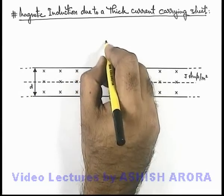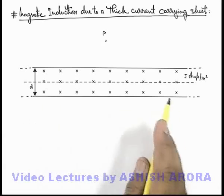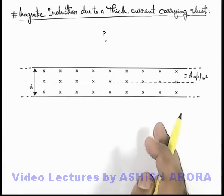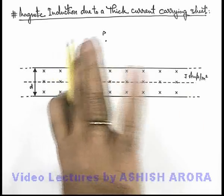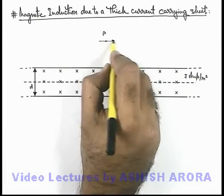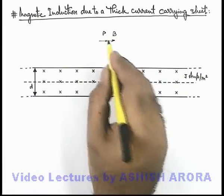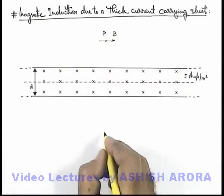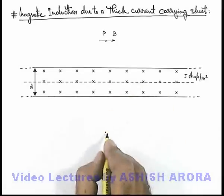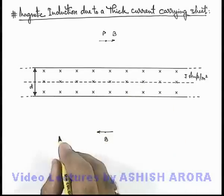Say if, outside at a point P, we are required to find the magnetic induction due to the sheet. The direction we can directly obtain by using the right-hand thumb rule. If current is going down, at point P the magnetic induction will be in the rightward direction. Similarly, if we consider a point below the sheet, by the right-hand thumb rule, magnetic induction will be in the leftward direction.